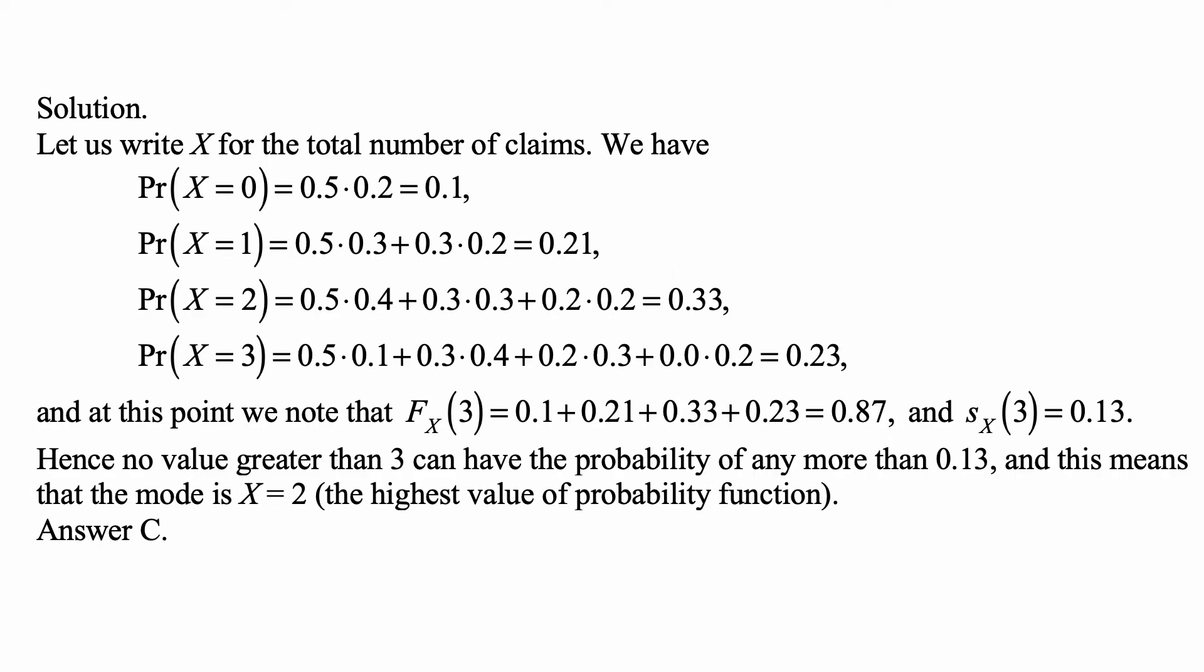So let's write X for the total number of claims, and we have this. The probability of X = 0, that's the probability the first driver, the good driver, has 0 claims, and the second one, bad driver, has 0 claims. They're independent, so we can multiply the probabilities, and that's 0.1.